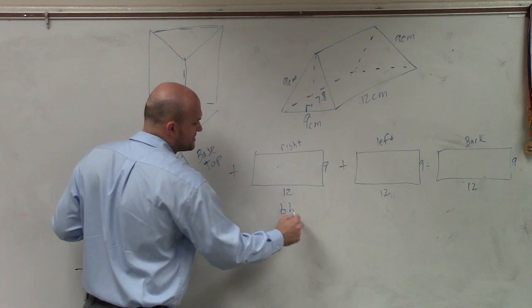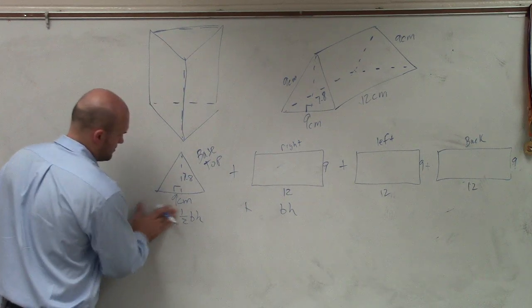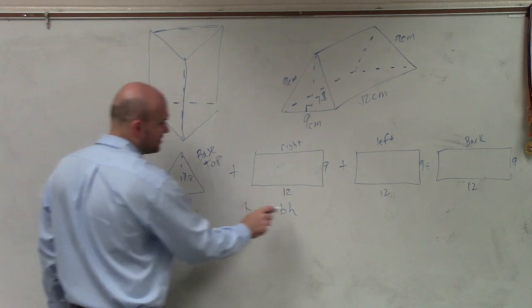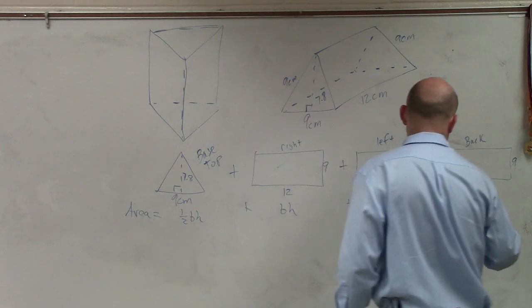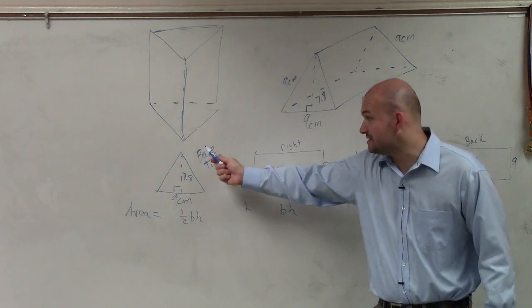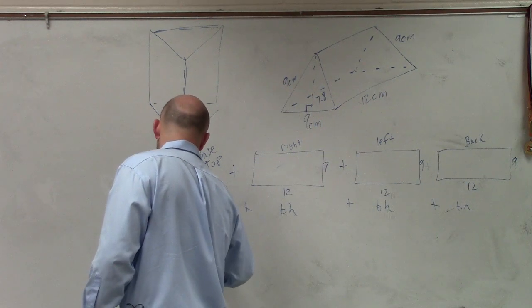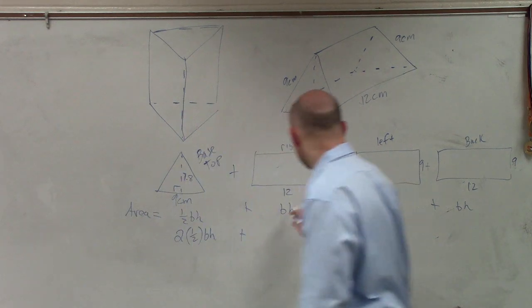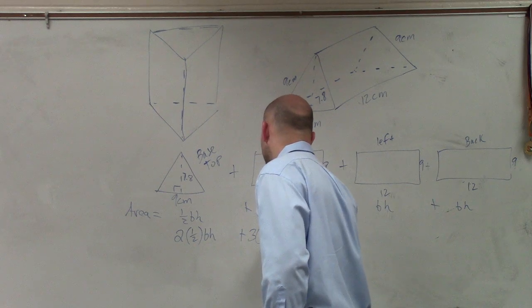base times height, plus base times height, plus base times height. Now there's two of these, the base and the top. So what I'm going to do is I'm going to multiply these by 2 times 1/2 base times height, plus there's three of these. So I'll multiply this by 3 times base times height.